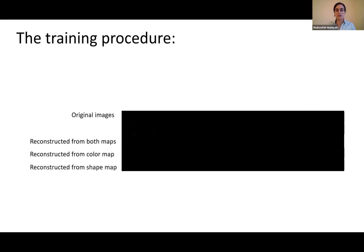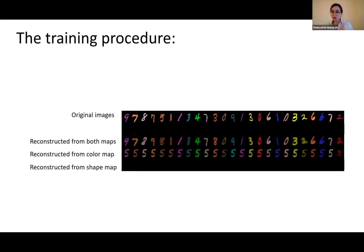This is an example of the training procedure. These are the MNIST images going into the model, and these are the reconstructions from both maps. This is the reconstruction from only the color map. If I set the shape map to zero, this is what I get from the color map: the color of the original images with no specific shape information, just a bunch of fives. This is how the reconstruction from shape maps looks like: the shape information with no color information. We separated these representations in the latent space.